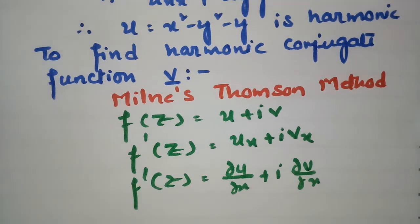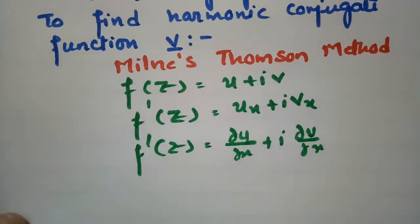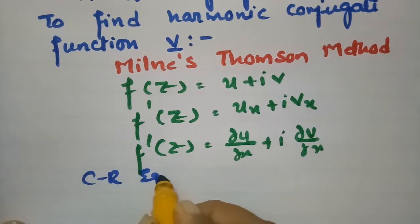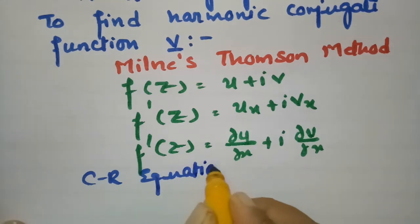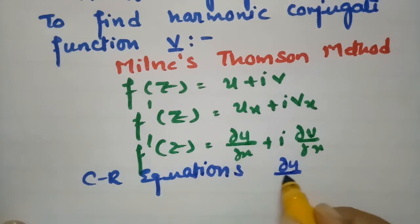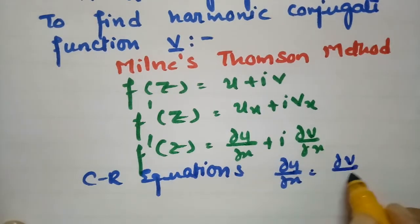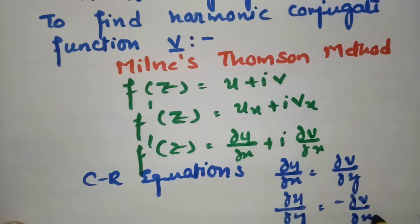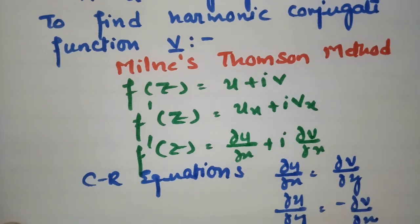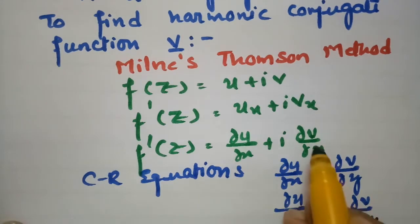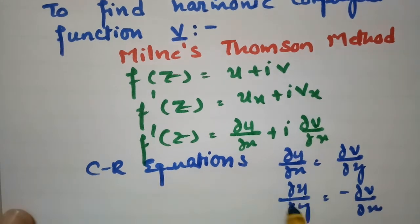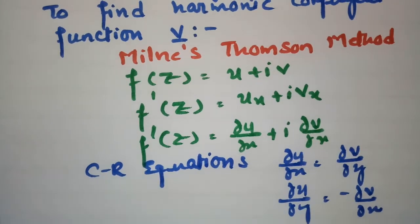So f'(z) = ∂u/∂x + i·∂v/∂x. Using the Cauchy-Riemann equations, we have ∂u/∂x = ∂v/∂y and ∂u/∂y = -∂v/∂x. Since we have u given, we need to transform the v terms into u terms.